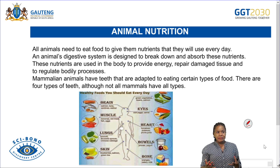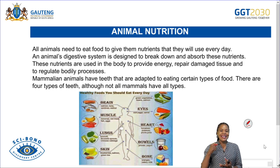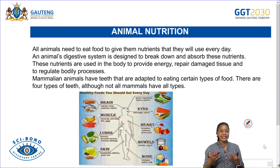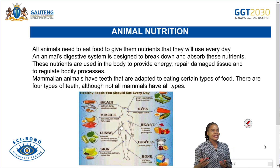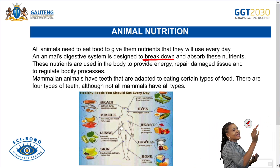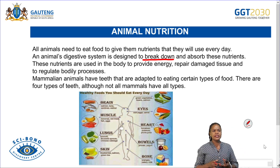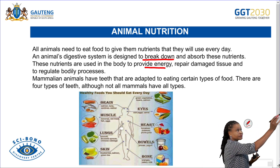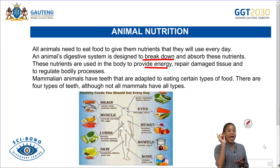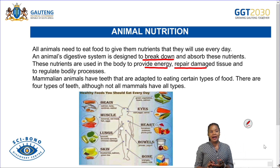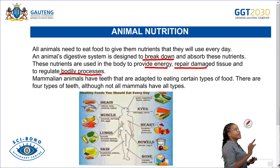Animals do not actually need food itself — they need the nutrients they get from food so they can perform their daily activities. The animal digestive system is designed to break down, absorb, and assimilate nutrients. These nutrients are used by the body to provide energy, repair damaged tissues, and regulate bodily processes.